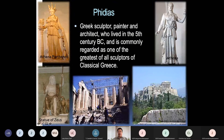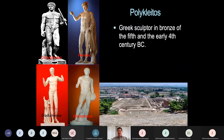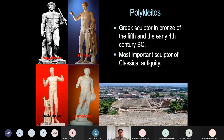Polyclitus was a Greek sculptor in bronze active in the 5th and early 4th century BC, considered one of the most important sculptors of Classical antiquity. Among his preserved works are the Doryphorus — the spear carrier — the Hermes, the Diadumenos, and the Discophorus. Most of his subjects were athletes — Olympians, from the word Olympia — related to the origins of the Olympic Games.